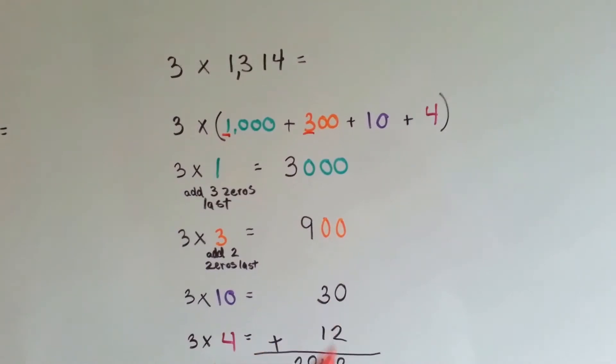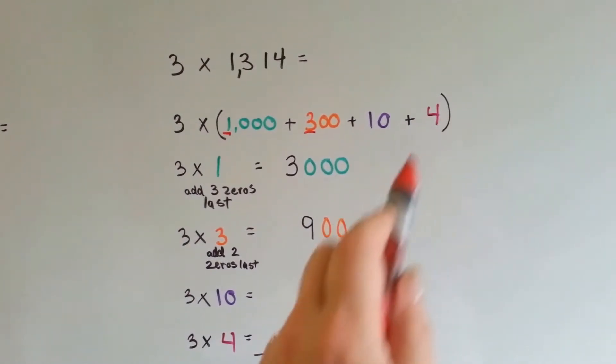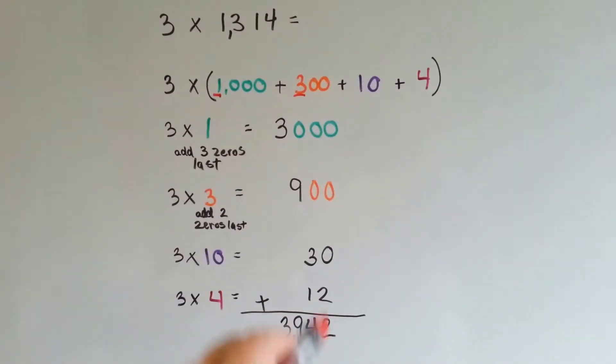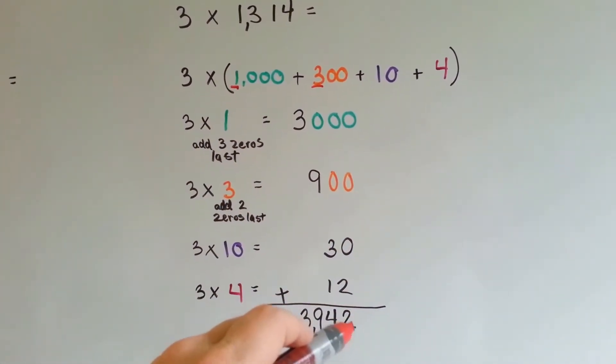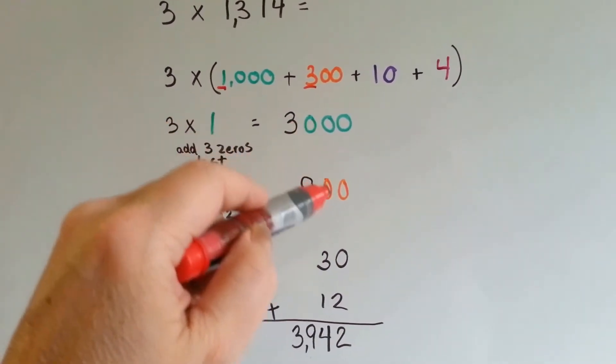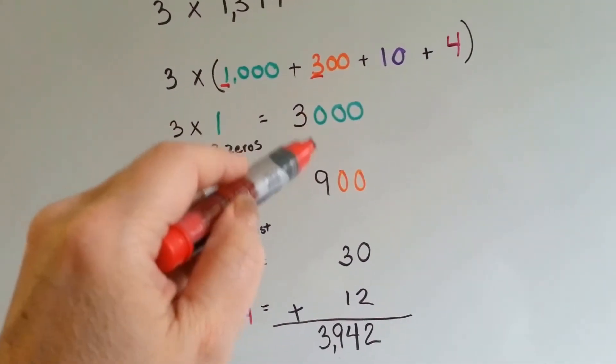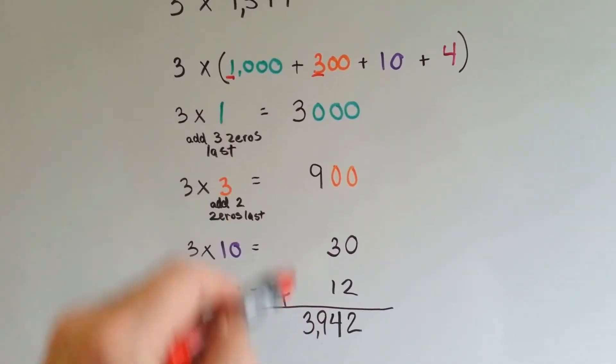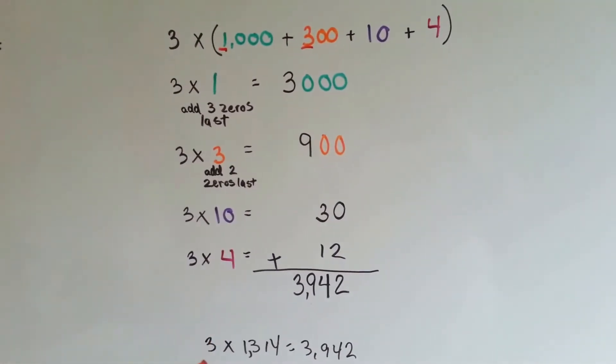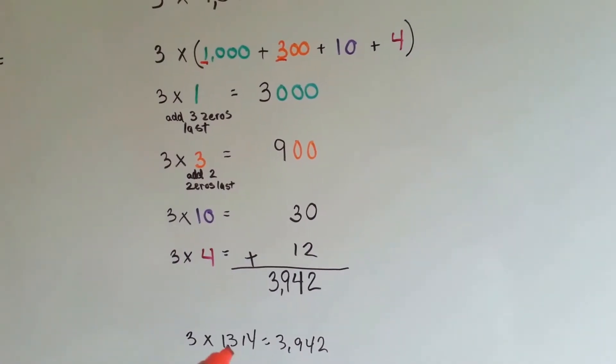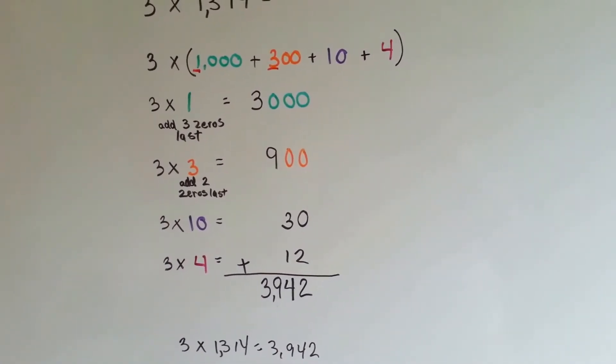3 times 10 is 30, and 3 times 4 is 12. We add them all together. 0, 0, and 0 and 2 is 2. 0, 0, 3, and 1 is 4. 0 and 9 is 9, and we drop the 3 down. So 3 times 1,314 is 3,942.